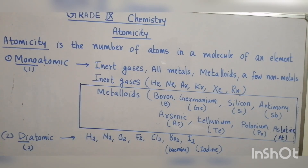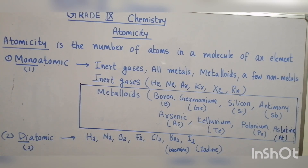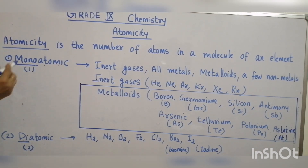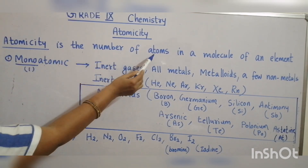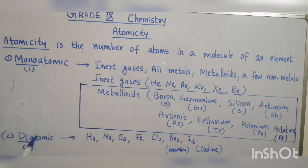As we know, atoms are the smallest or fundamental units of matter, and atoms combine to form molecules. Let us discuss the atomicity of various elements in the periodic table. Atomicity is the number of atoms in a molecule of an element.